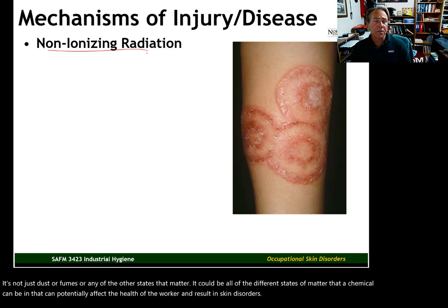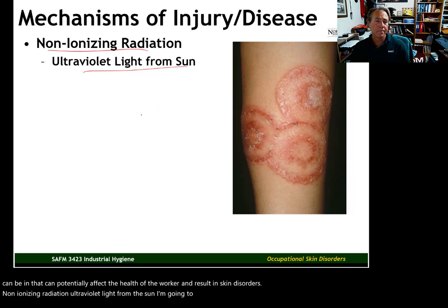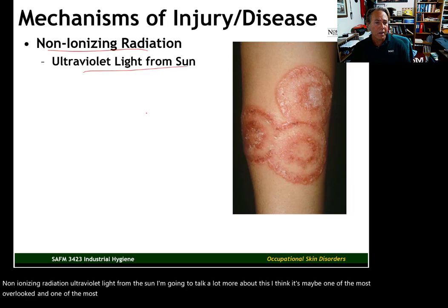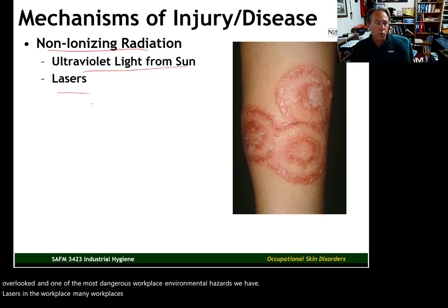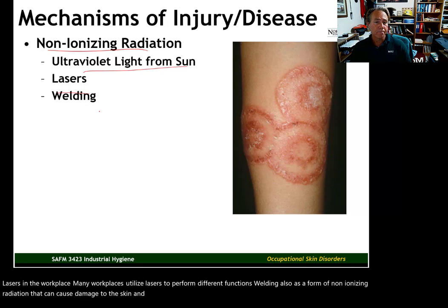Non-ionizing radiation is another hazard — particularly ultraviolet light from the sun, which I think is one of the most overlooked and most dangerous workplace environmental hazards we have. Lasers in the workplace are used in many workplaces to perform different functions. Welding is also a form of non-ionizing radiation that can cause damage to the skin and especially the eyes.